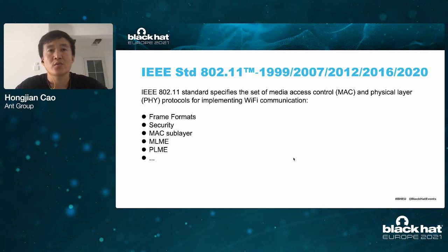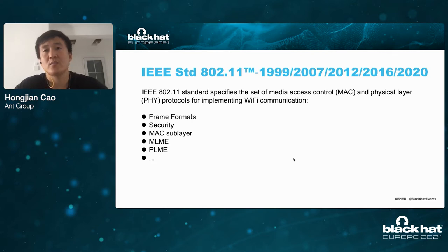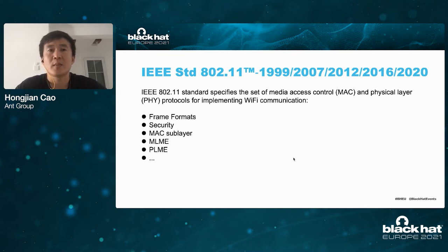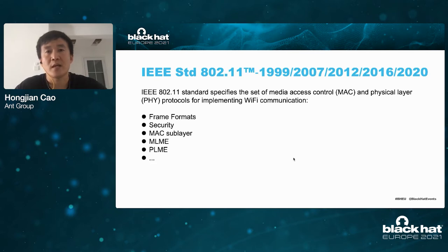IEEE 802.11 standard specifies the set of media access control and physical layer protocols for implementing Wi-Fi communication. It contains details of all the functions and features of the Wi-Fi protocol, with new content added with each update. For example, it defines the type, format, and function of Wi-Fi frames, contains Wi-Fi security content, mechanisms for receiving and transmitting packets in the MAC sublayer, and operations in MLME and PLME.